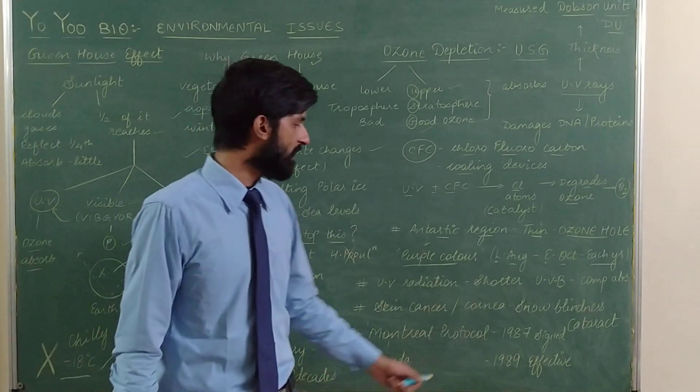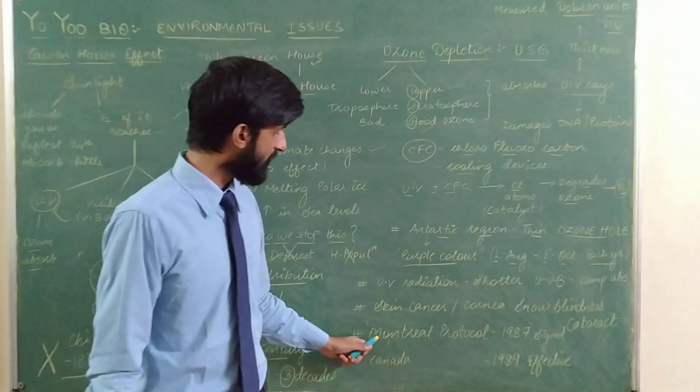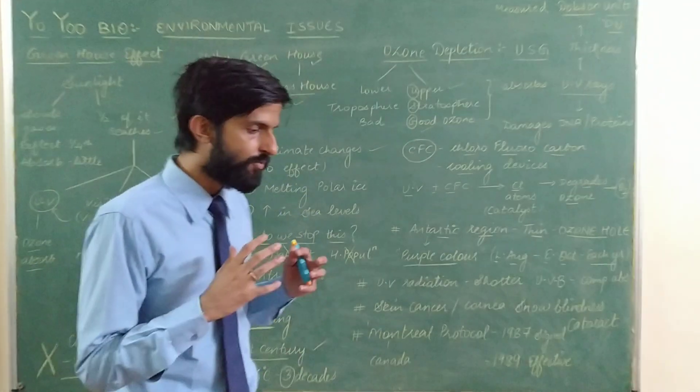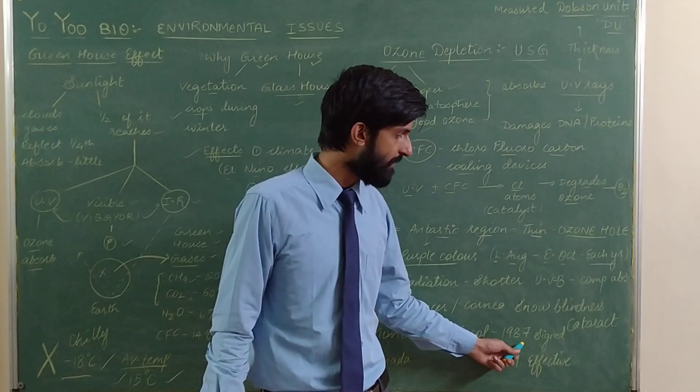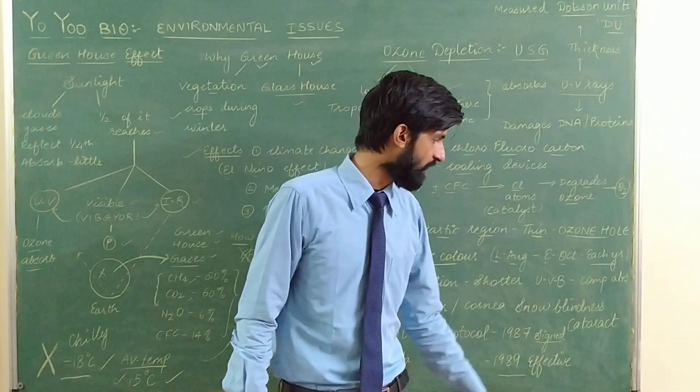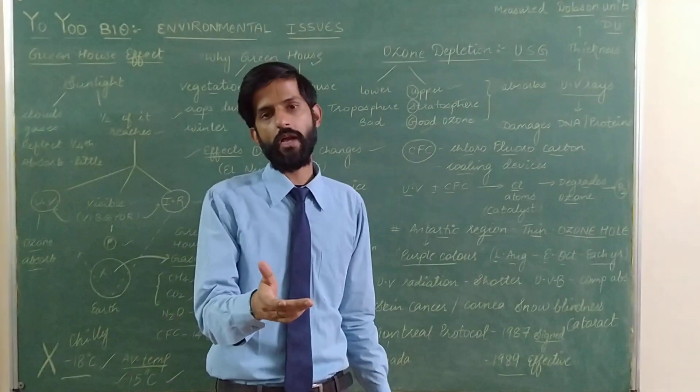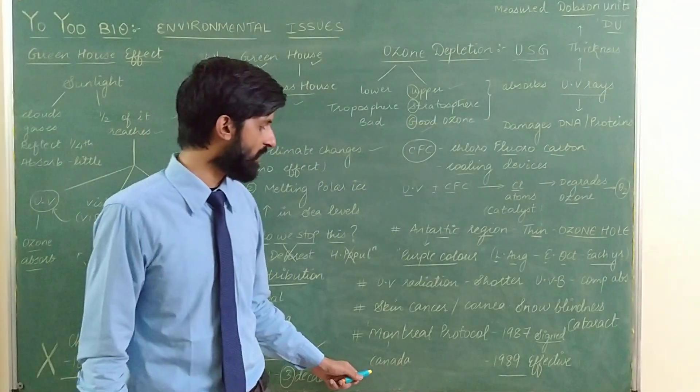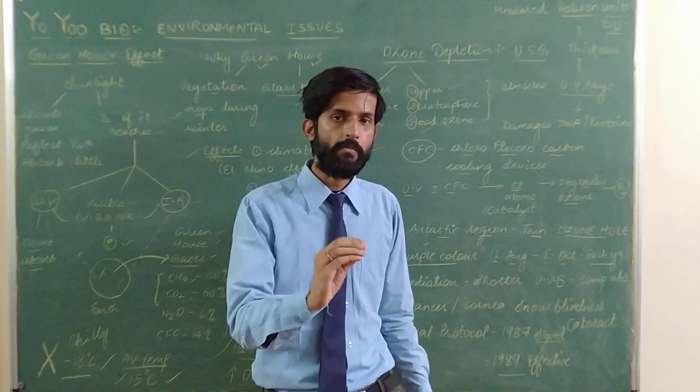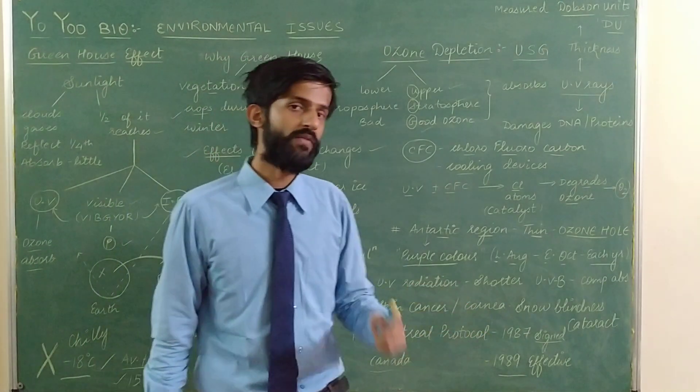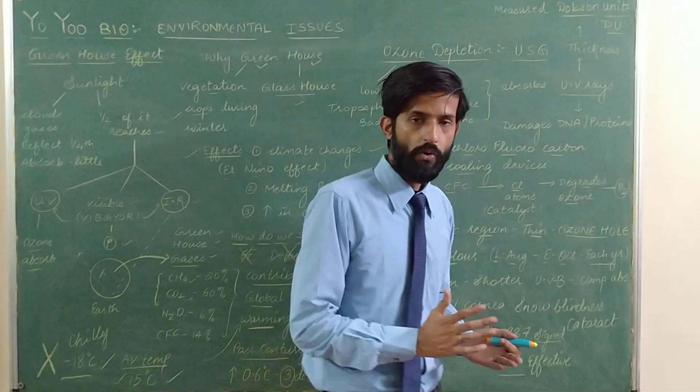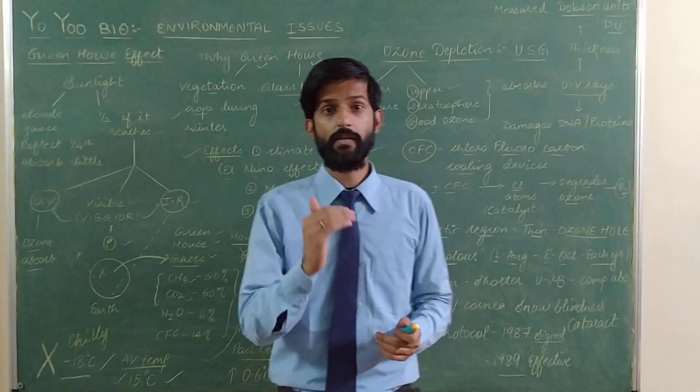An international meeting called Montreal Protocol was held in Montreal, Canada. In this meeting, people decided to protect the ozone layer. This treaty was signed in 1987 but became effective in 1989. Basic MCQs: Montreal Protocol was in Canada, it was about ozone, signed in 1987, effective in 1989.